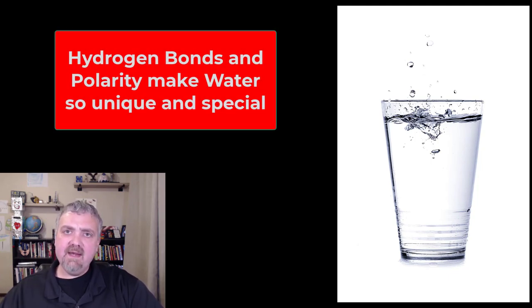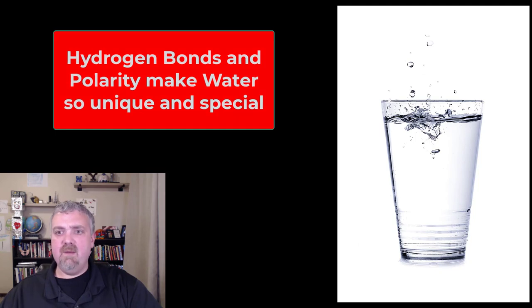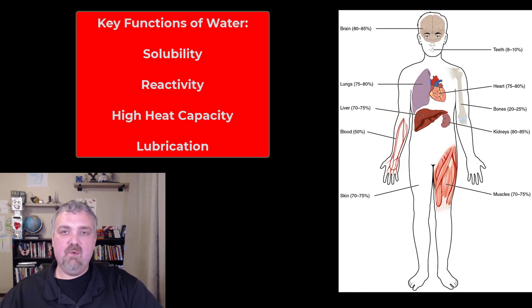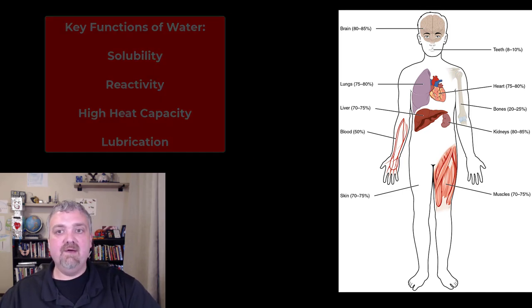Its polar nature and its hydrogen bonding capabilities are the two things we're going to talk about here. The key things we're going to cover when it comes to the human body are solubility, reactivity, what's called its high heat capacity, and lubrication. But I have a few more I'm going to add as well because they're very important to the world around us too.